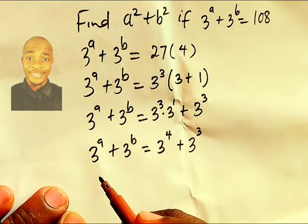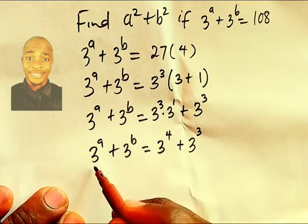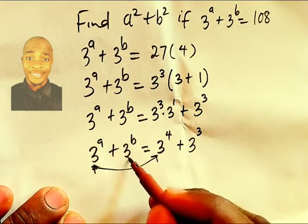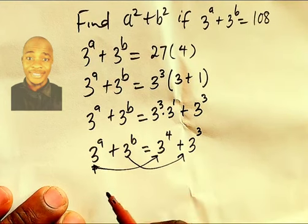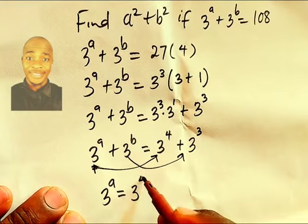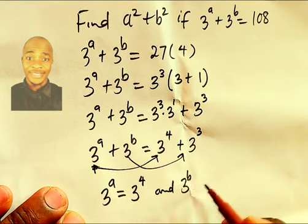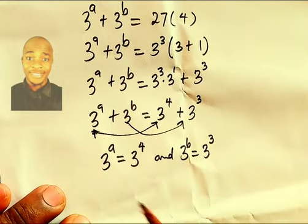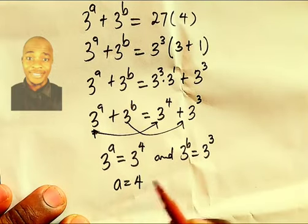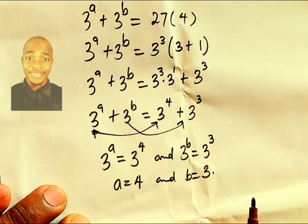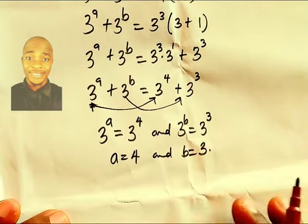Now we try to compare the two sides of this. We compare this with this, and this with this. We're going to have that 3^a = 3⁴ and 3^b = 3³, which shows that a = 4 and b = 3.